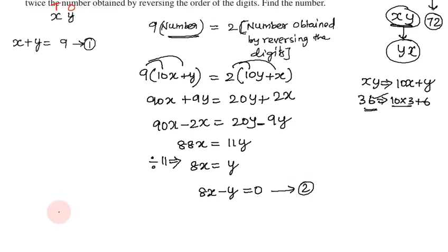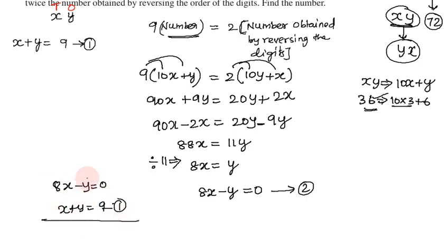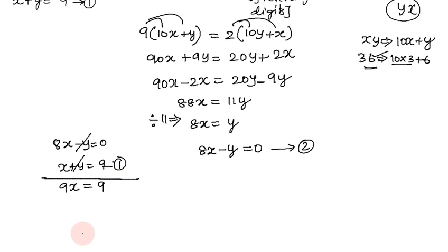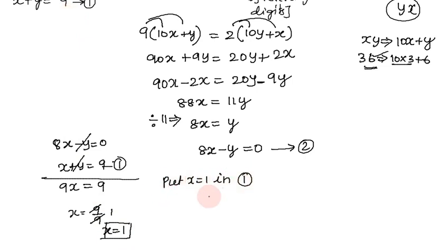We will now solve the equations. Equation 1: x plus y equals 9. Equation 2: 8x minus y equals 0. Adding the two equations, y cancels: 8x plus x equals 9x equals 9. So x equals 9 divided by 9, which equals 1.